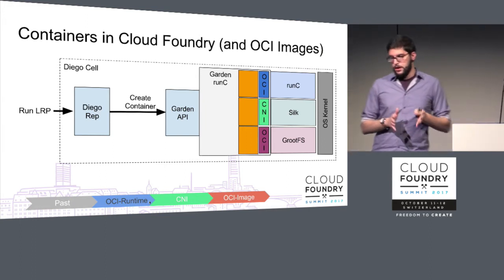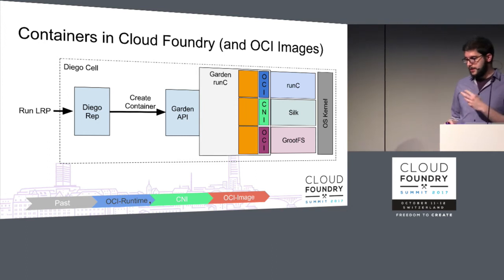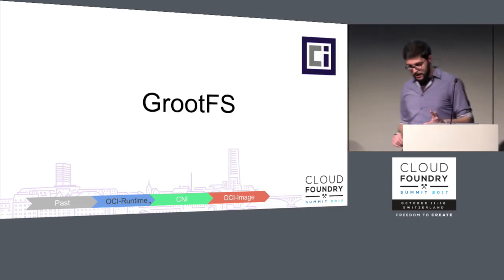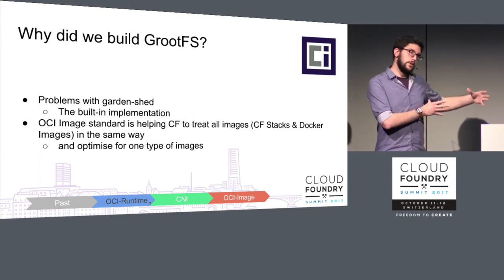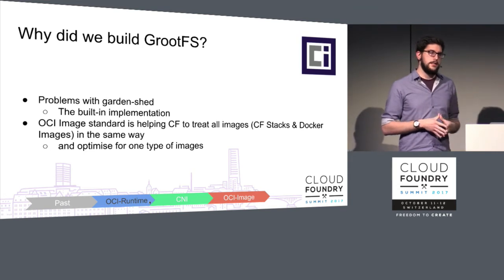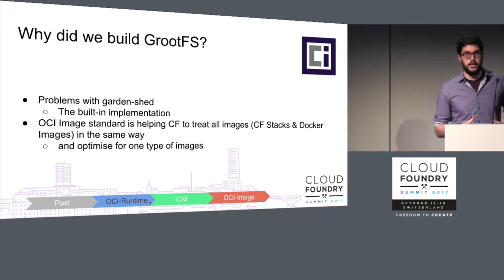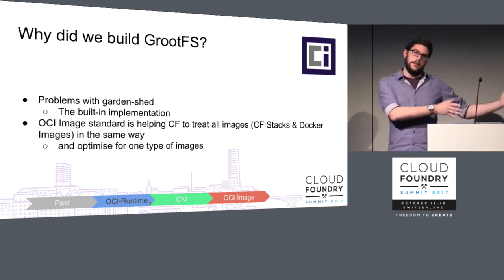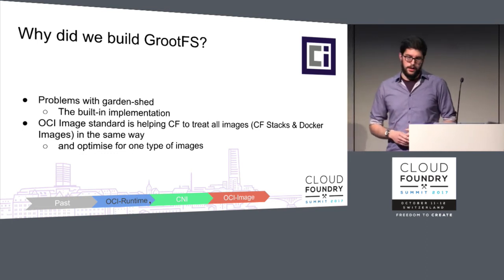To reduce Garden-runc even further and use OCI images, GrootFS was created. It's an image plugin for Garden that makes Garden even smaller by removing the previously built-in file system. The previously built-in component is called Garden-shed, which has been largely an implementation detail of Garden-runc. That codebase is about three years old and it would be very hard to refactor it to add OCI image support. OCI image support unlocks a lot of features including OCI buildpacks, and allows treating all different container workloads — buildpack-based CF stacks and Docker-based ones — the same way, enabling various optimizations.